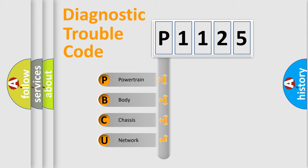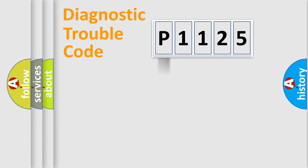We divide the electric system of automobile into four basic units: powertrain, body, chassis, and network. This distribution is defined in the first character code.